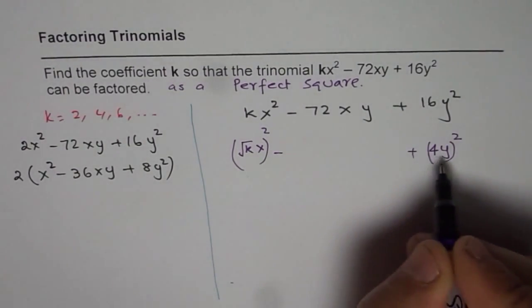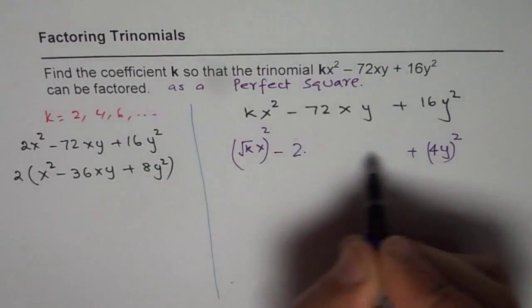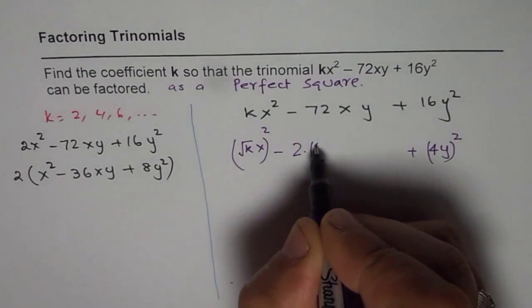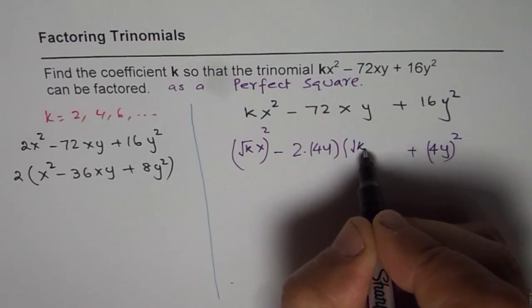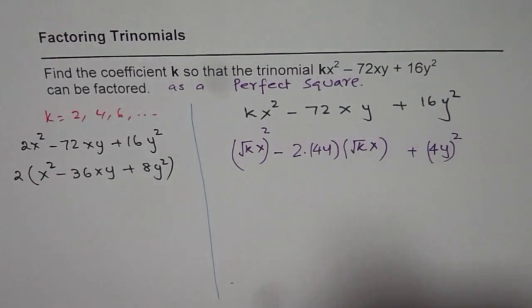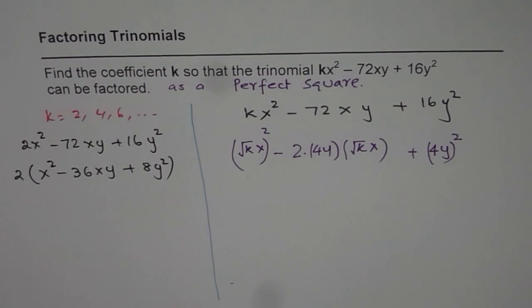And the number in the center should be 2 times these 2 numbers. That is 4y times this number, which is √k·x. Now, if you get this kind of a thing, only then you can have a perfect square.